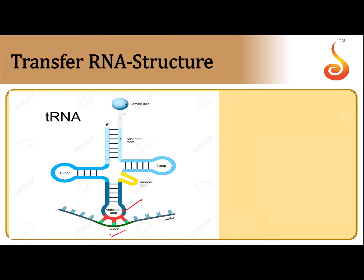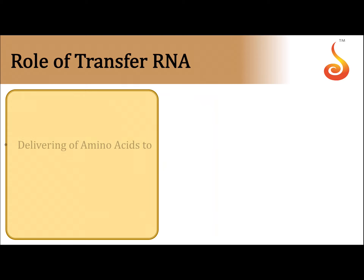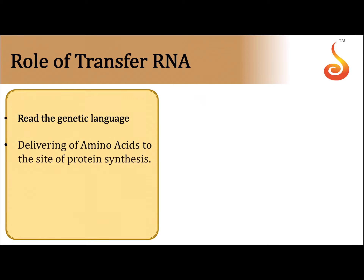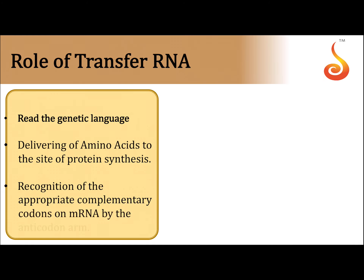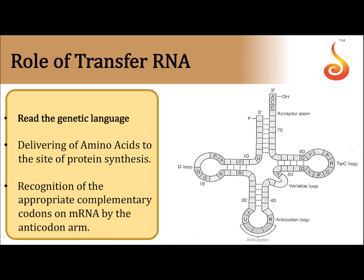The anticodon is part of tRNA and can read the genetic language. The activated amino acid comes and attaches at the 3' end of the amino acid acceptor arm. This 3' end has the sequence CCA, and all activated amino acids attach at this end.